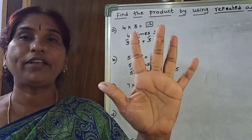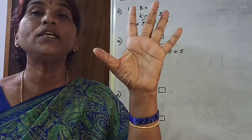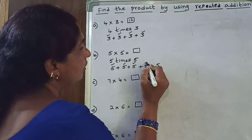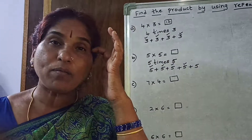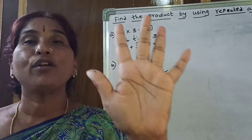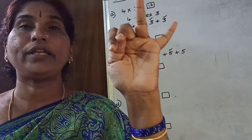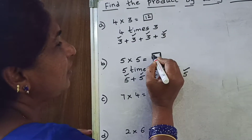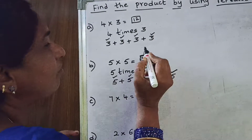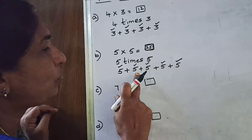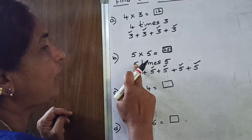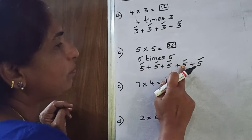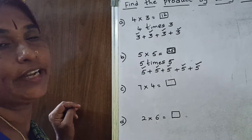Again, 15 in mind, 5 in hand, 15 after: 16, 17, 18, 19, 20. This number also completed — 20. Again, 20 in mind, 5 in hand, 20 after: 21, 22, 23, 24, 25. So 5 fives are 25. You have to do repeated addition: 5 times 5, so 5 plus 5 plus 5 plus 5 plus 5 is equal to 25.